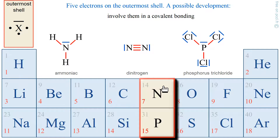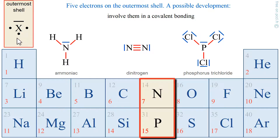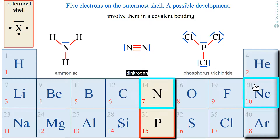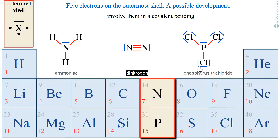Nitrogen and phosphorus have the same valence shell — a lone pair and 3 electrons available. This explains why dinitrogen exists: there is a triple bond. Each nitrogen keeps its lone pair, so each nitrogen atom is surrounded by 8 electrons, just like neon. Ammonia also exists — you can check that the octet rule is satisfied.